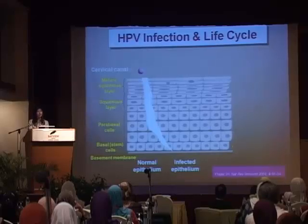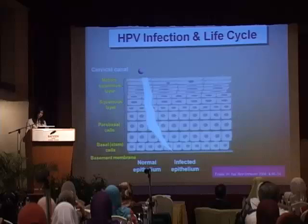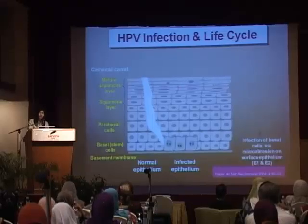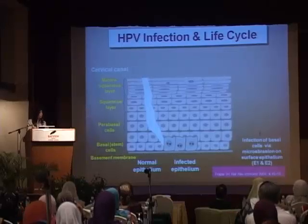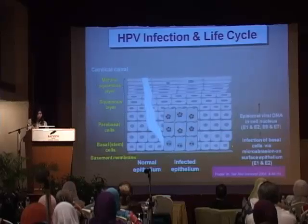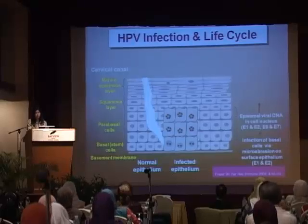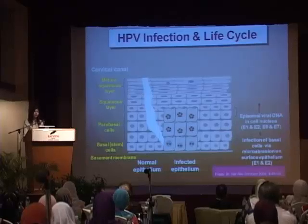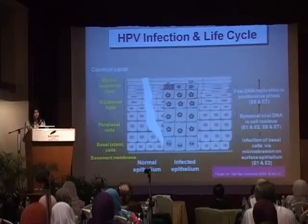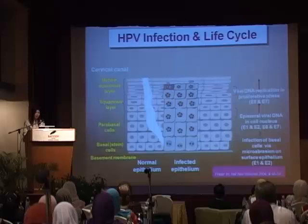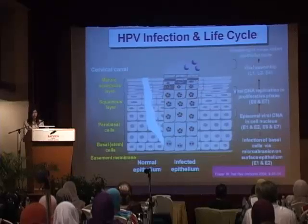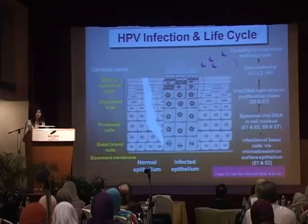So what happens when a cell gets infected by HPV? Taking the cervical epithelium as an example — the virus enters the cell through micro-abrasions of the surface epithelium. The normal epithelium on the left becomes the infected epithelium shown in the middle. Once the virus enters the cell, it integrates with the cell and starts producing viral DNA in the cell nucleus. Subsequently, the virus and the cell duplicate together in the proliferative phase of the epithelium. Once the basal cell differentiates into mature keratinocytes, it signals the virus to produce more and more viral particles, which are then shed from the surface epithelium as infectious virus particles.